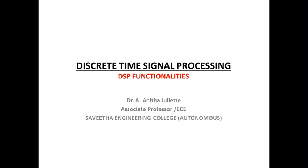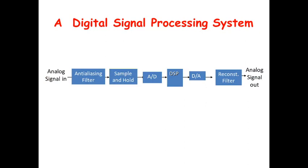Hello all, we will be starting with the DSP functionalities to begin with the discussion of the DSP processes. In general, a digital signal processing system is given like this — an analog signal input has to be sampled and then discretized, passed on to an analog-to-digital converter, which is then processed by a digital signal processing system, and then the digital signal is again converted back into an analog signal, reconstructed using a reconstruction filter, and finally an analog signal is obtained.